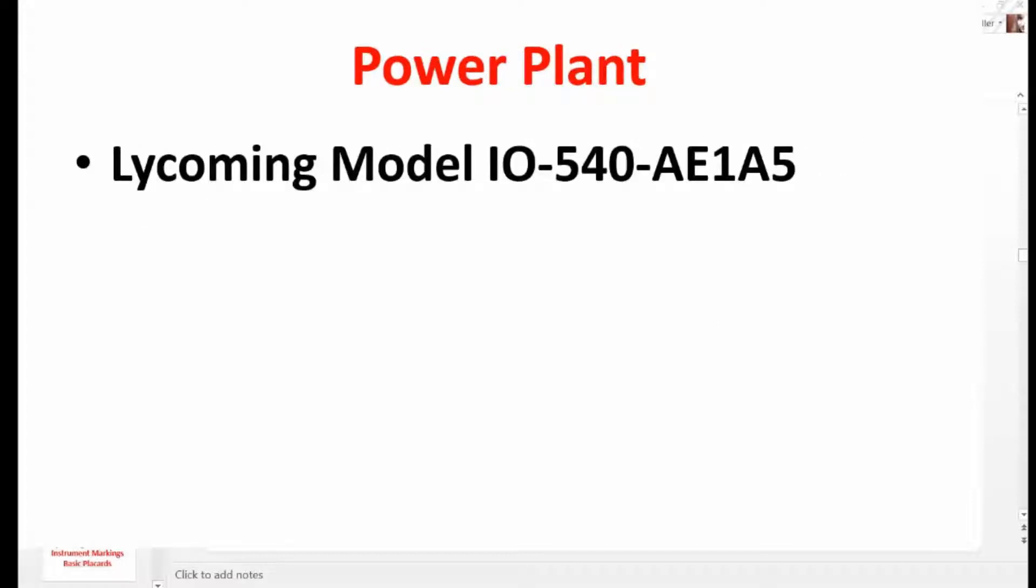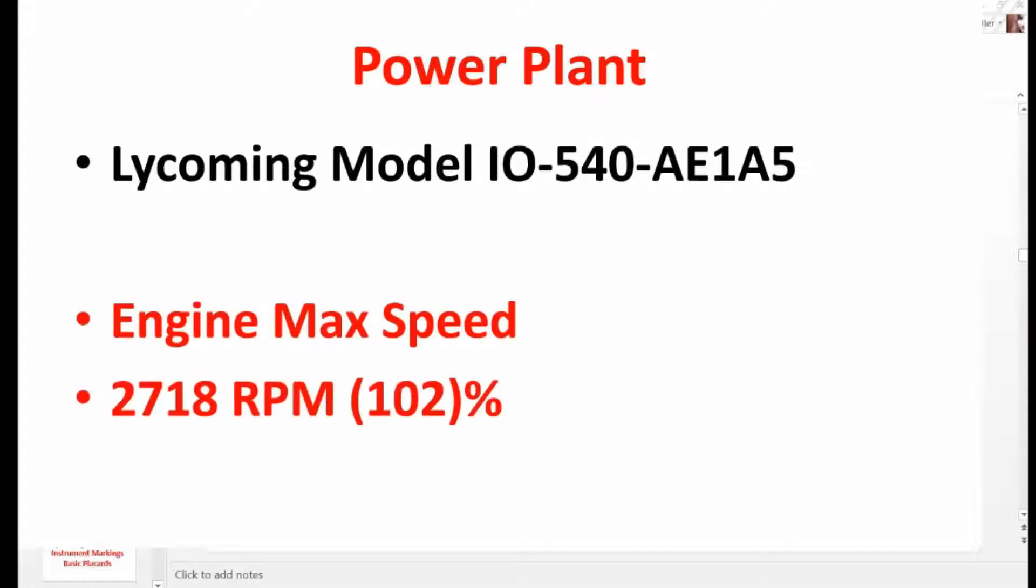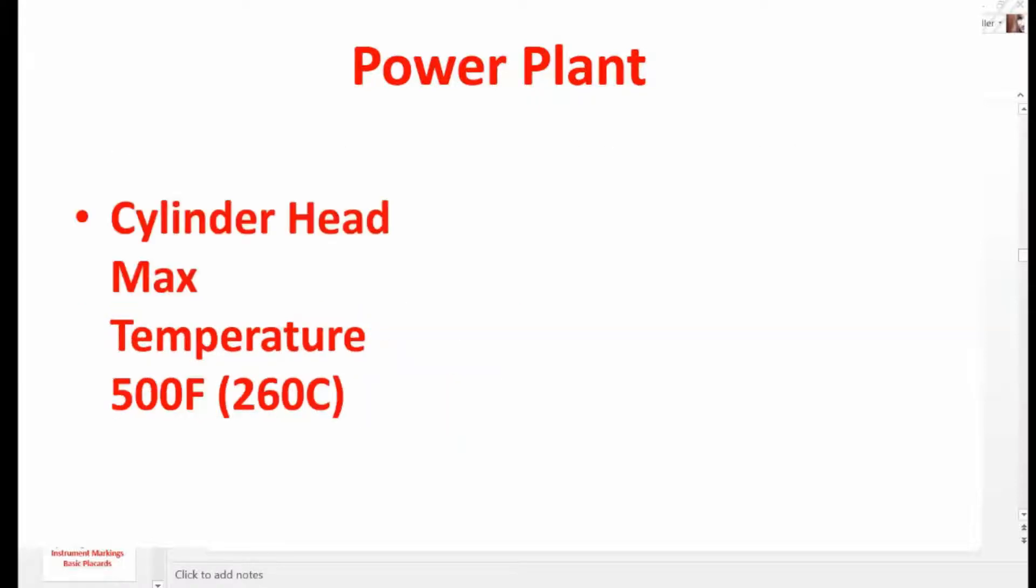Power plant limitations for the Lycoming model IO540-AE1A5. Engine max speed, 2,718 RPM, 102%. Cylinder head max temperature, 500 degrees Fahrenheit, 260 degrees Celsius.